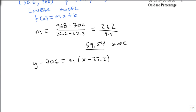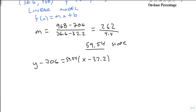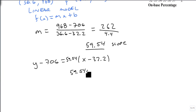Now we evaluate this, and we know what m is. m is 59.54. We'll just round it to two decimal places. Keep it simple. We need our calculator again, though. 59.54 times 32.2 is 1917. So we're going to get 59.54x minus 1917.19.